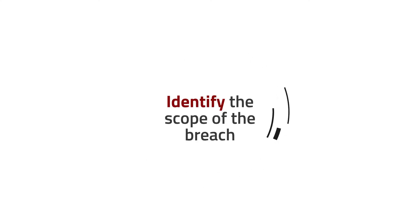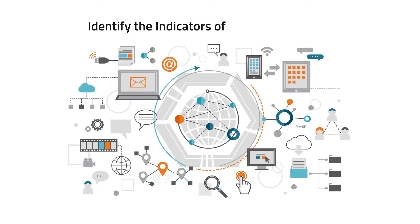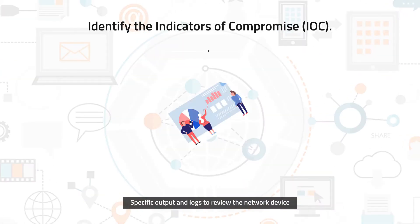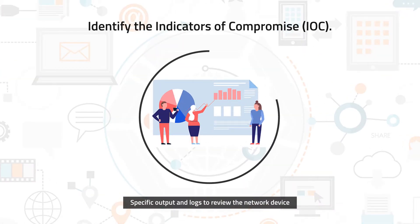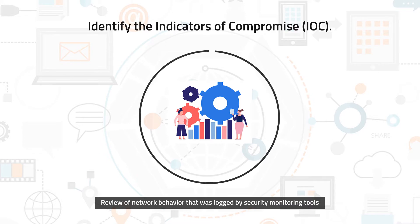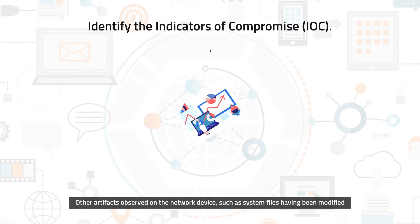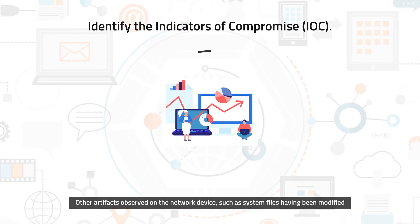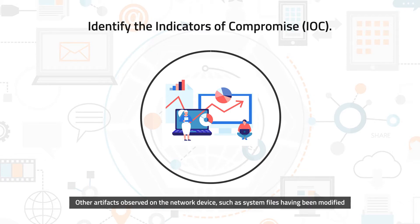Identify the scope of the breach. Identify the Indicators of Compromise, specific output and logs to review the network device. Review network behavior that was logged by security monitoring tools. Other artifacts observed on the network device, such as system files having been modified.